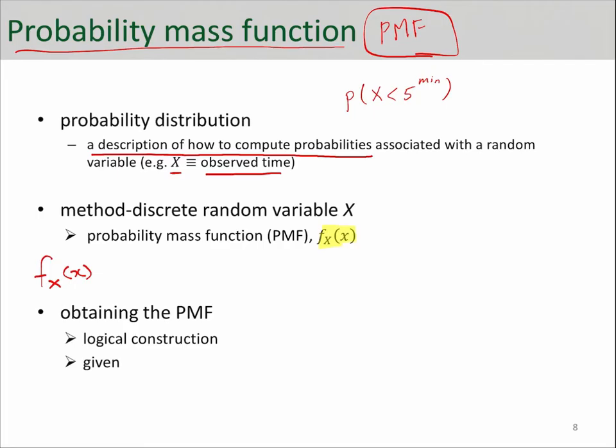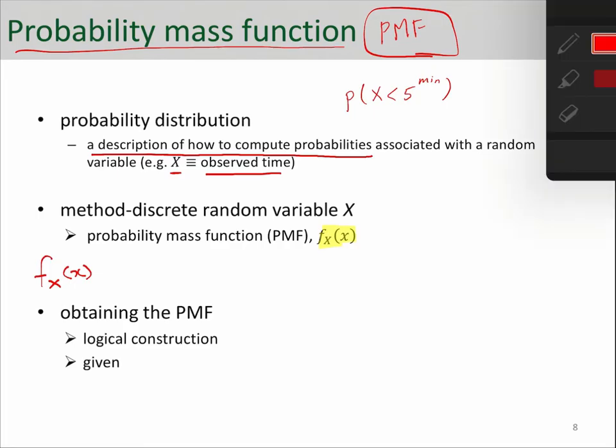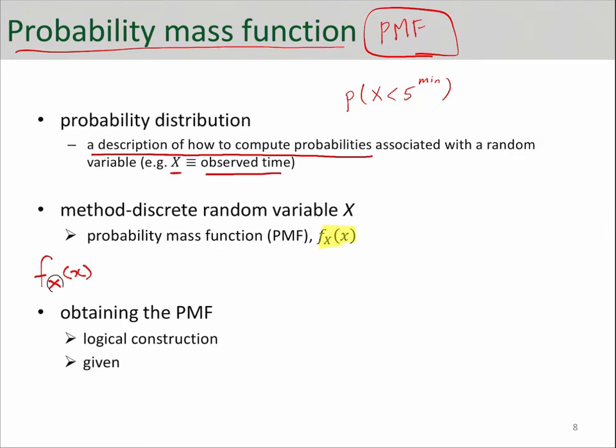In this formula, this capital X here is the random variable, the notation for your random variable. When we define X, for example, as observed time, we put that X here so we know we're defining the probability mass function for that random variable X. So that is the notation for a random variable.